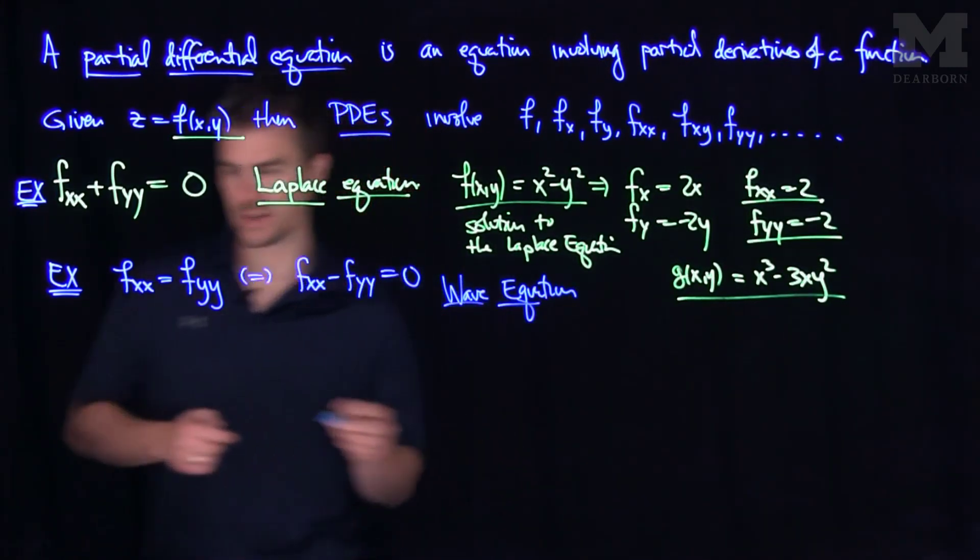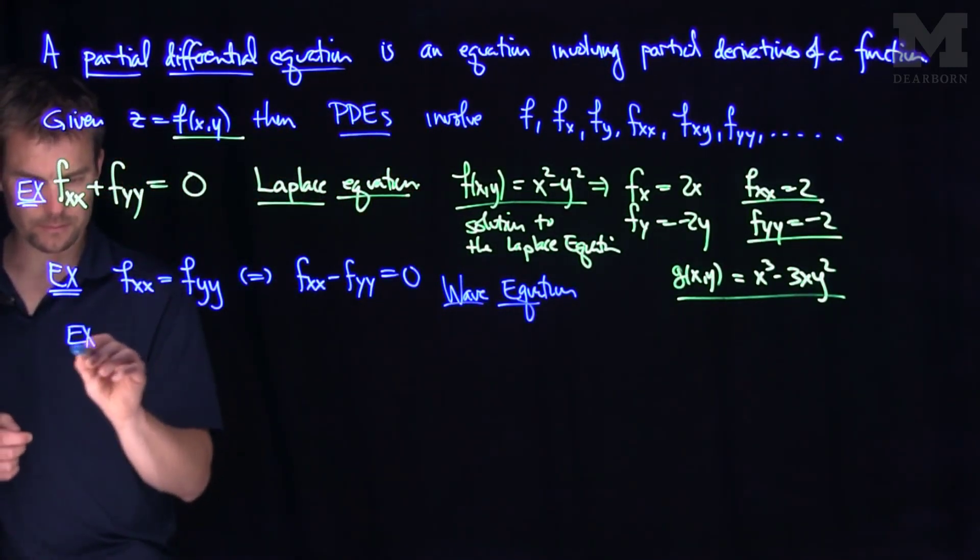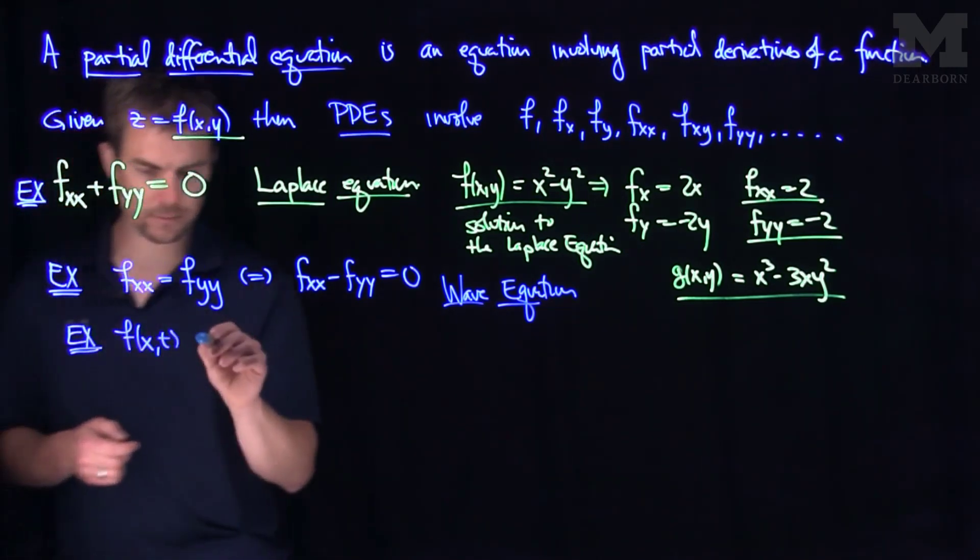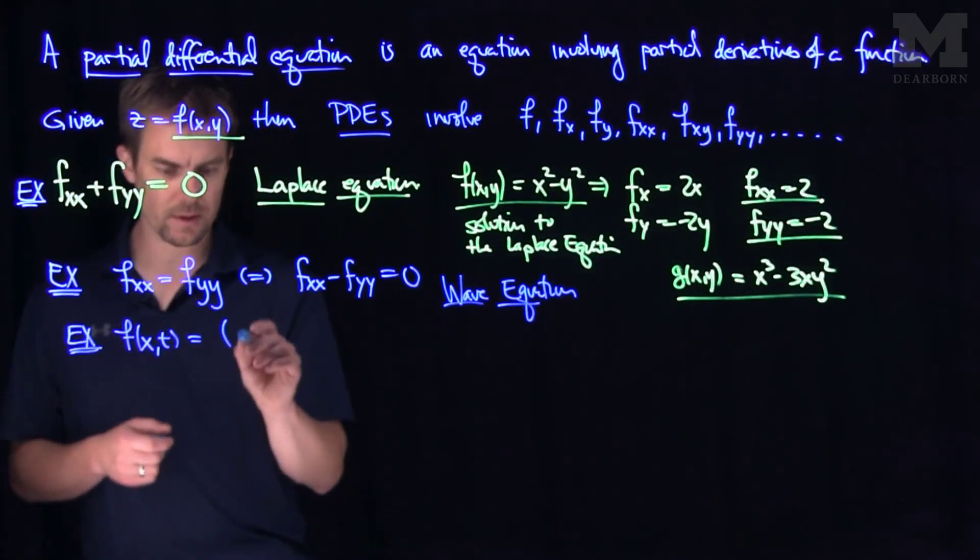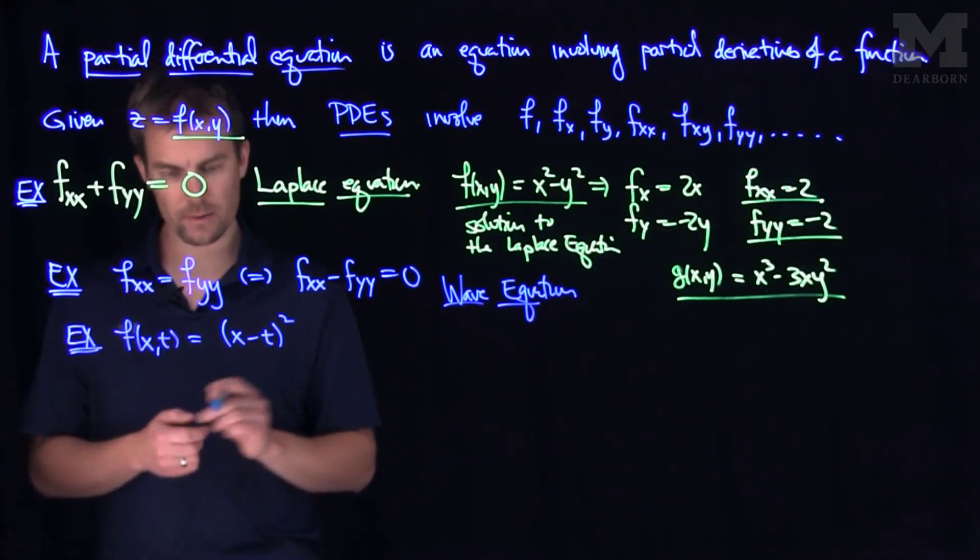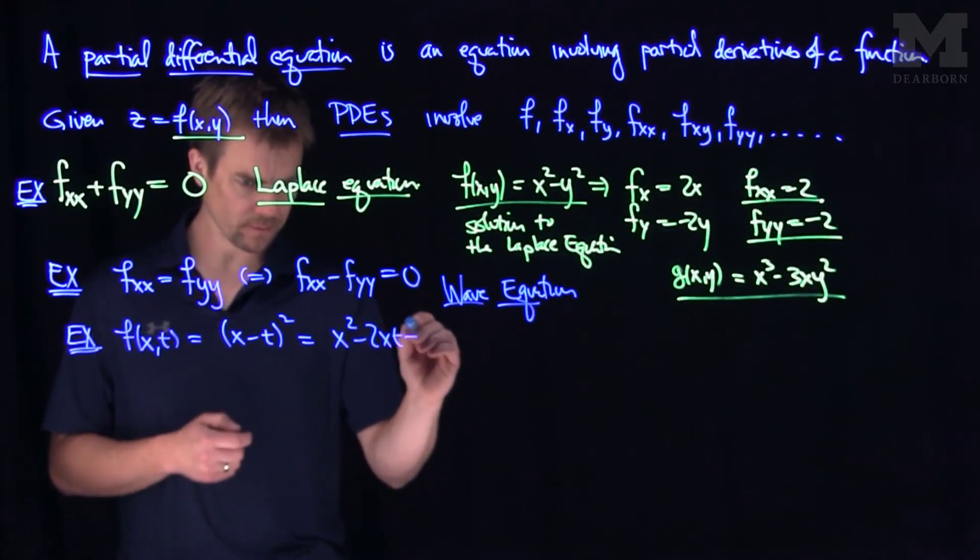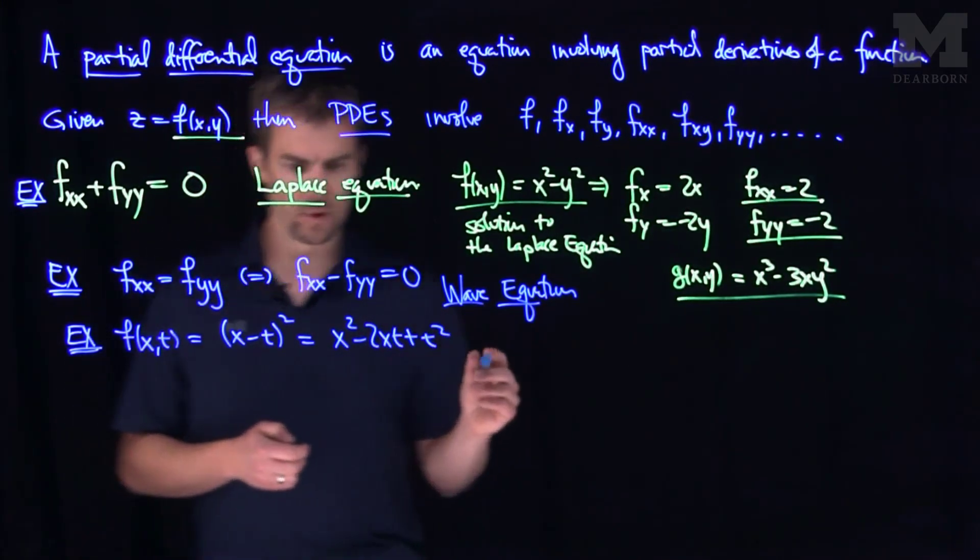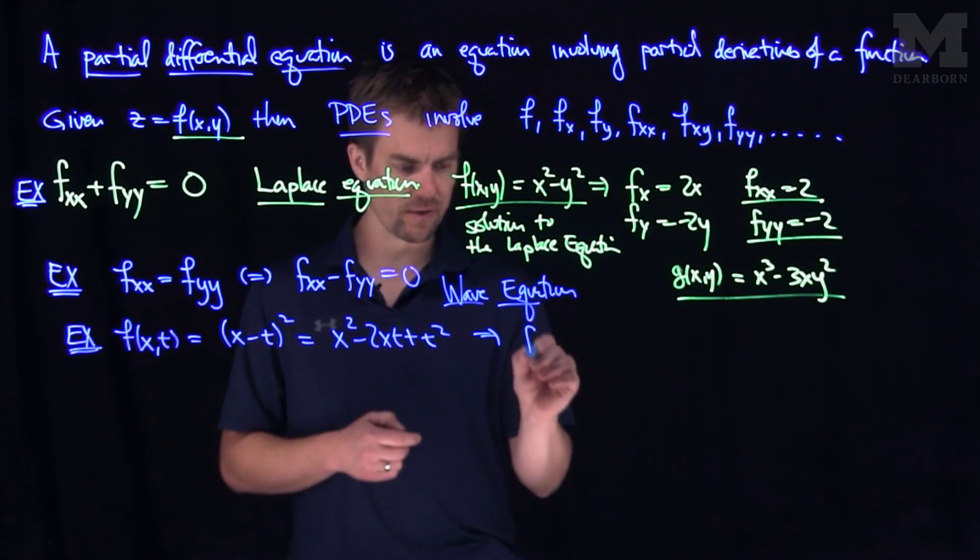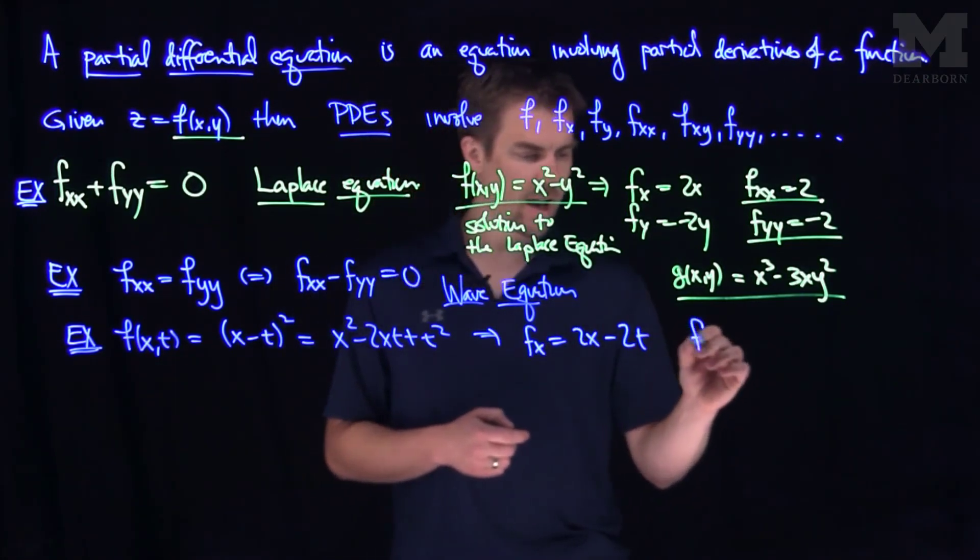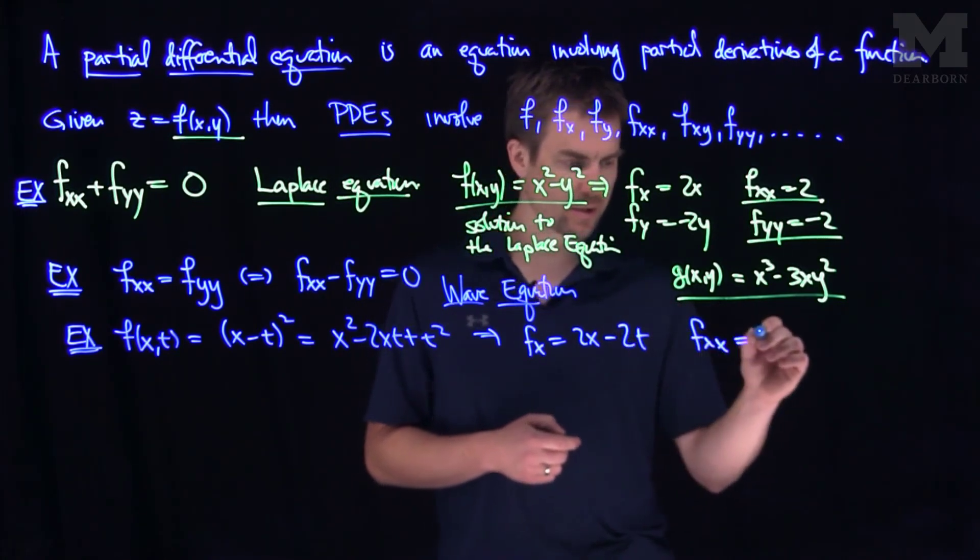You can check, for example, here's an example. If I look at f of x and t, which is x minus t quantity-squared, or if we FOIL this out, this would be x-squared minus 2xt plus t-squared. Let's do the x-derivative of this. The x-derivative is 2x minus 2t. The x-x-derivative is just 2.